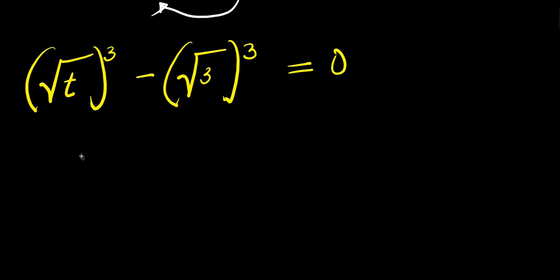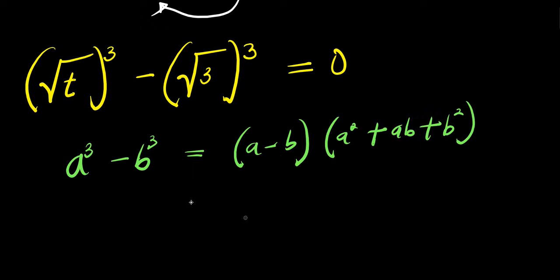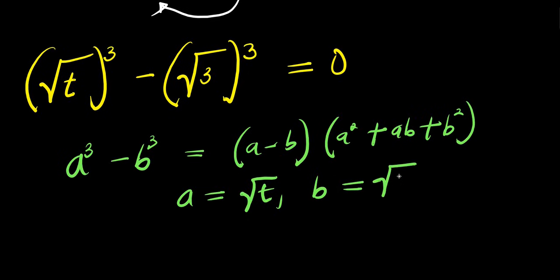Now if you have a to the power of three minus b to the power of three, this equals a minus b times a squared plus ab plus b squared. Right now my a is root t and my b is root of three, so we apply this identity here.